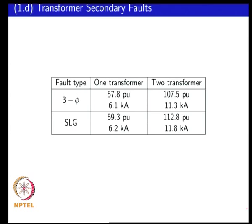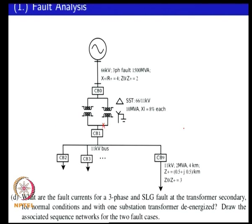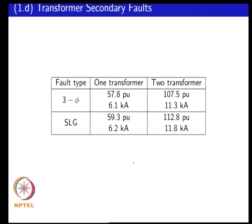You can see that when there was one transformer, if you have two transformers the fault current level is almost double. You can still see that the single line-to-ground case has higher current. So if you want to protect circuit breakers for a fault occurring on the low-voltage bus of the substation, you need to rate your system to handle the highest level of fault current, which happens when both transformers are operating in parallel.